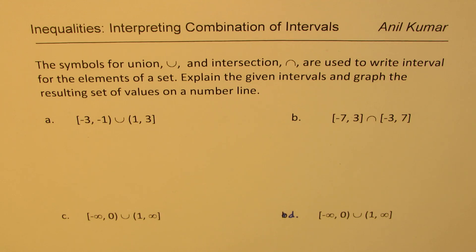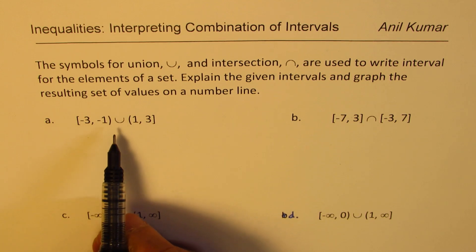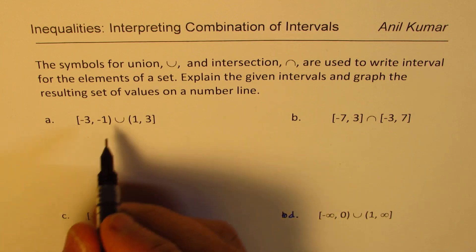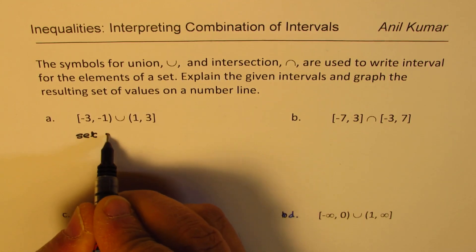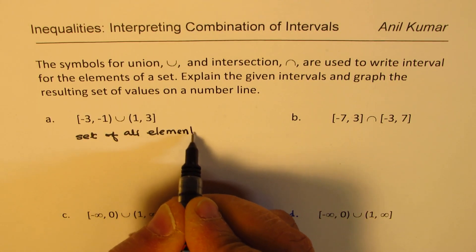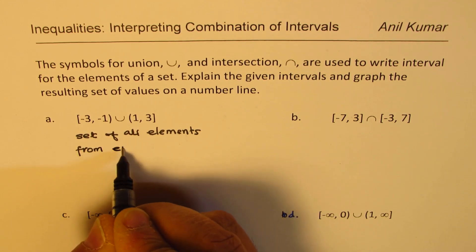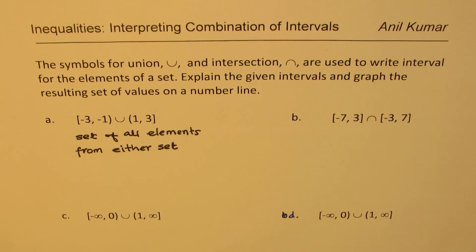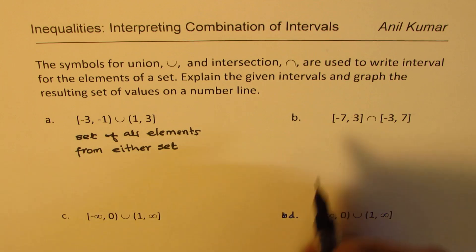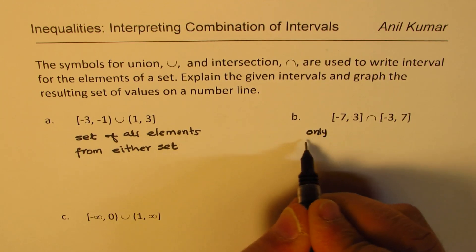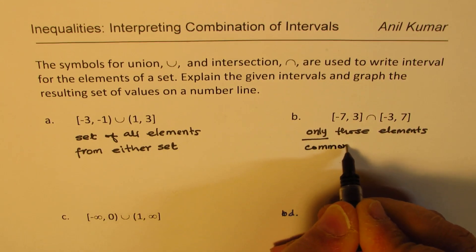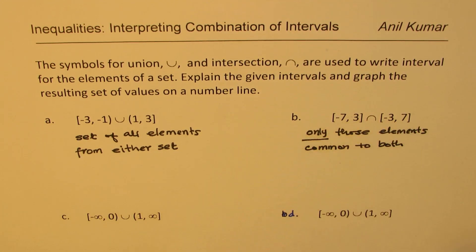Now, let's begin with the interpretation of the given interval. Whenever we use the symbol which stands for union, what does it mean? It signifies set of all the elements from either set. So, this means set of all elements from either set. And when we are saying intersection, this intersection signifies the set of only those elements common to both. So, this means only those elements common to both.